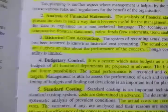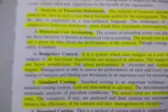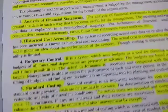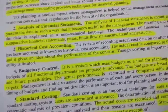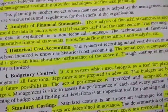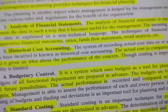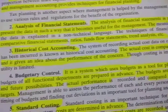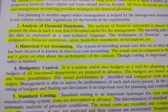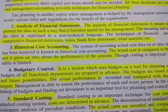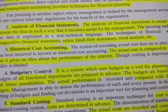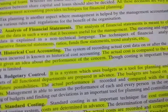The next point is historical cost accounting. In historical cost accounting, the actual data is recorded. The system records the actual cost data after the date when it has been incurred — that is known as historical cost accounting. What has actually been done is recorded as the actual data cost.